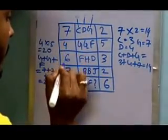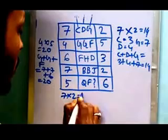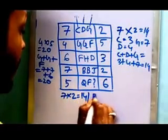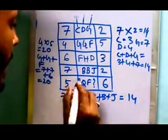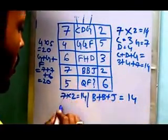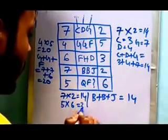Similarly, the fourth row: 7 times 2 equals 14, and B plus P plus J equals 14. In case of the last row, 5 times 6 equals 30.